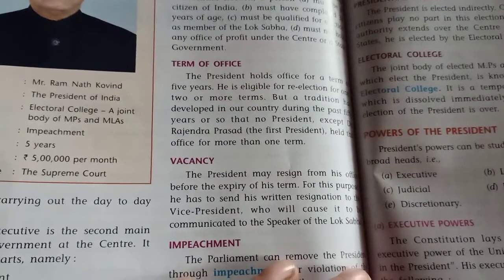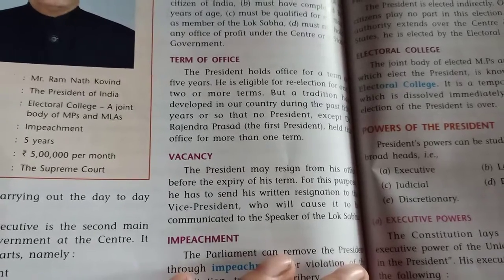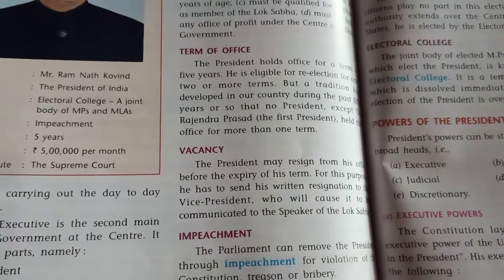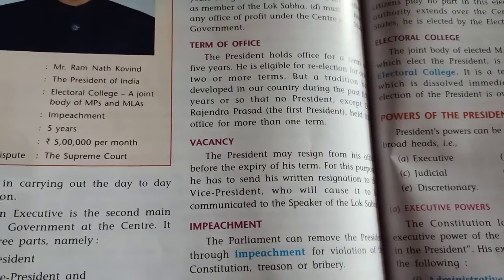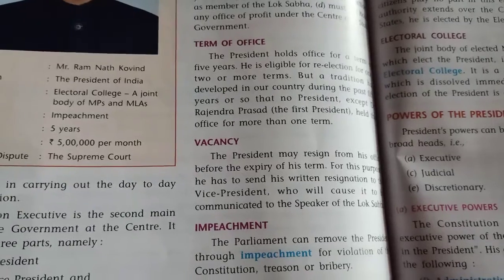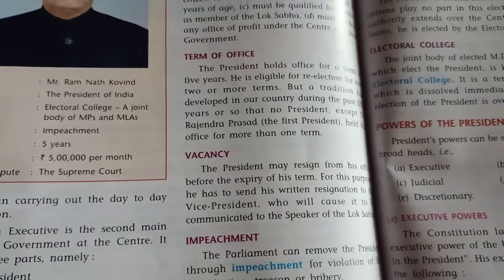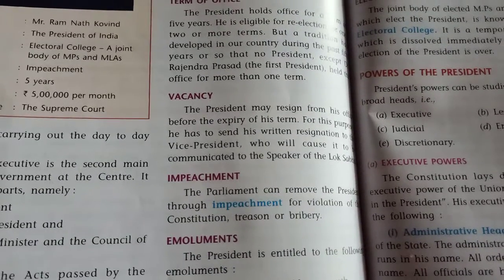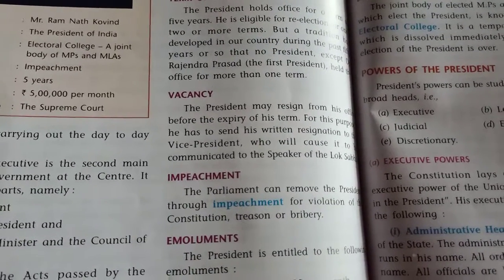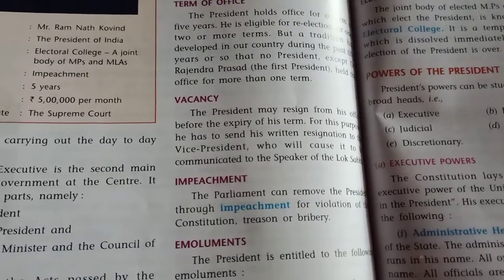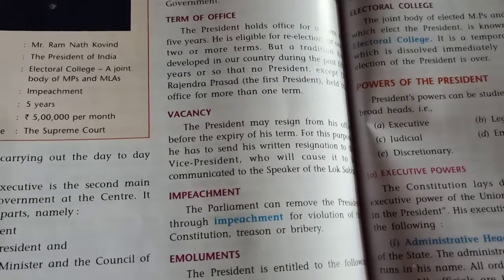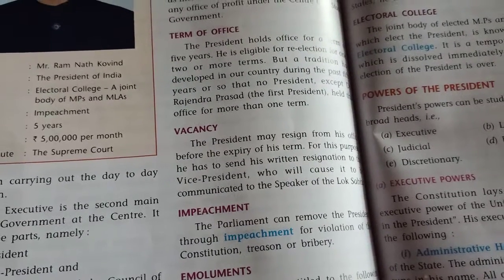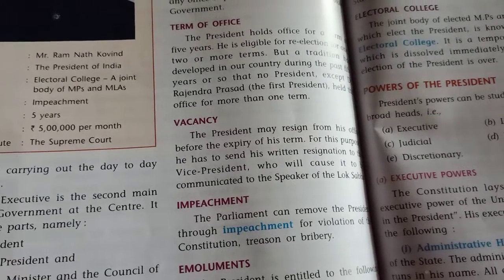Regarding vacancy: the president may resign from office before the expiry of the five-year term. He or she can submit a written resignation to the Vice President, and the Vice President's work is to communicate it to the Speaker of the Lok Sabha. Also, the parliament can remove the president through impeachment — which is a procedure through which the president or the Chief Justice of India is removed for violation of the constitution, treason, or bribery.